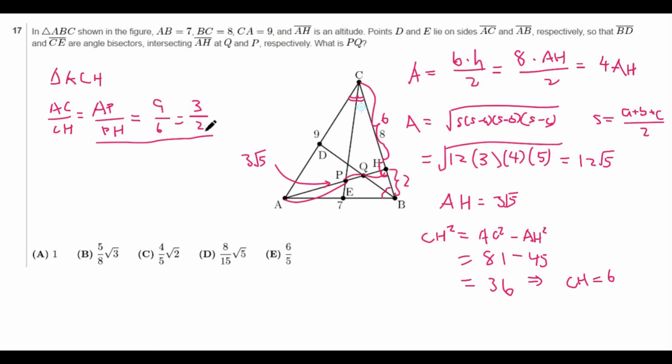Now, similarly, we can do the same thing for AQ to QH because we can use angle bisector theorem on triangle ABH. We get that AB over BH is equal to AQ over QH. And what does AB over BH equal? Well, AB is just 7 and BH is just 2, so this is just 7 halves. So now we know that the ratio of AQ to QH is 7 halves, and the ratio of AP to PH is 3 halves.